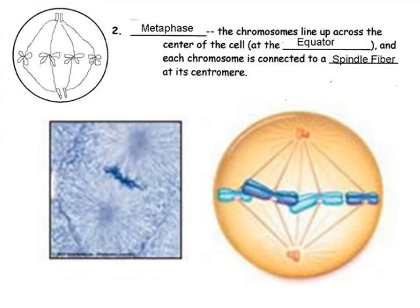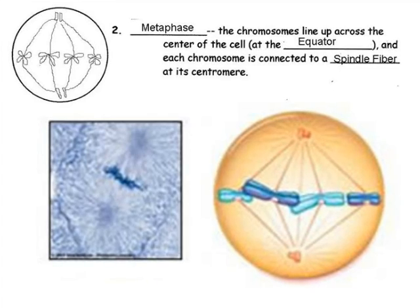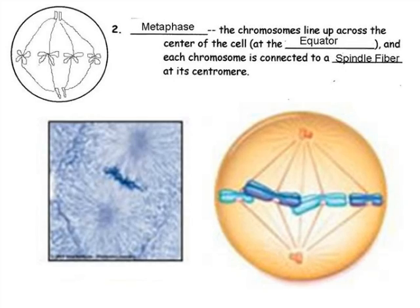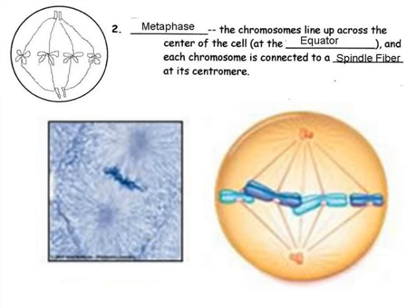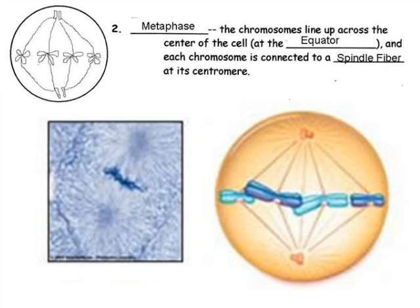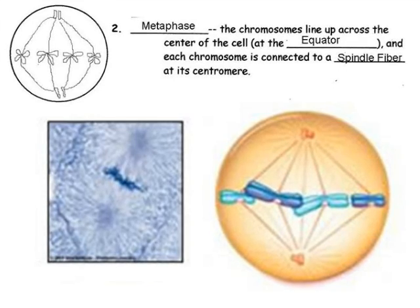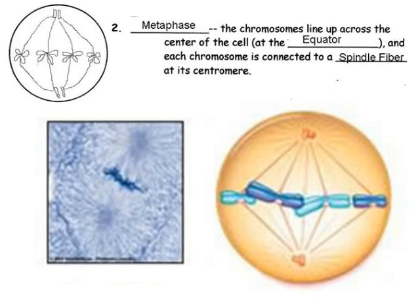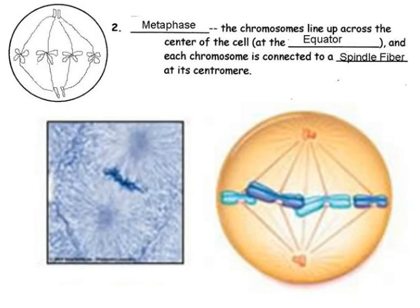During metaphase, the chromosomes line up along the center of the cell. The center of the cell is referred to as the equator. Each chromosome is connected to a spindle fiber at its centromere.